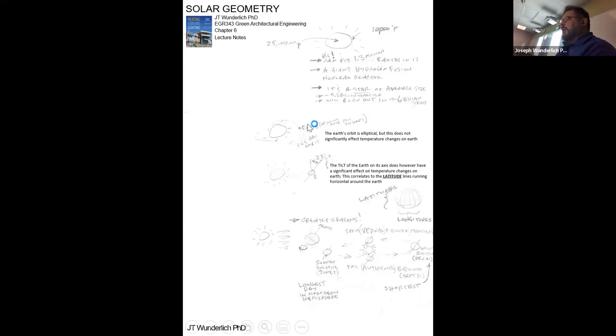The Earth's orbit is elliptical. But this does not significantly affect temperature changes on Earth. And it's not what makes the seasons. The tilt of the Earth makes the seasons. So it's orbiting in an elliptical plane around the sun. The Earth is tilted on its axis by 23 degrees. And that's what makes the seasons.